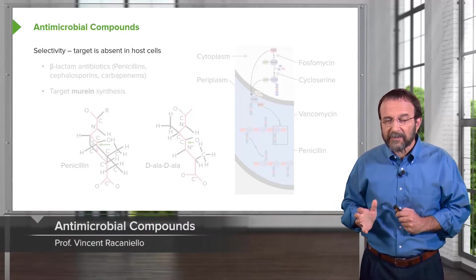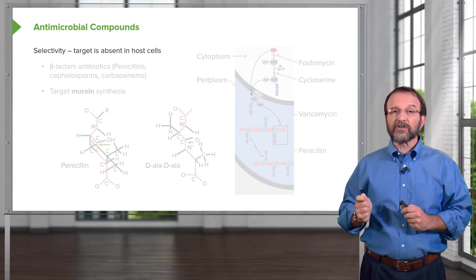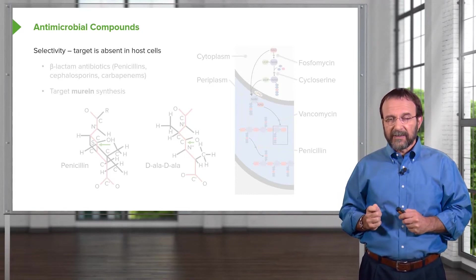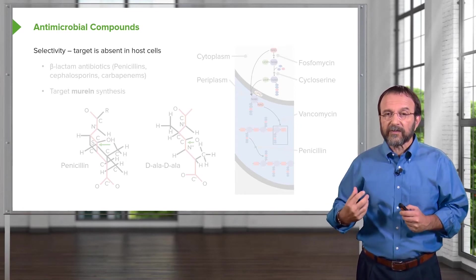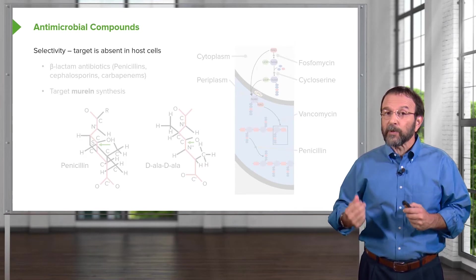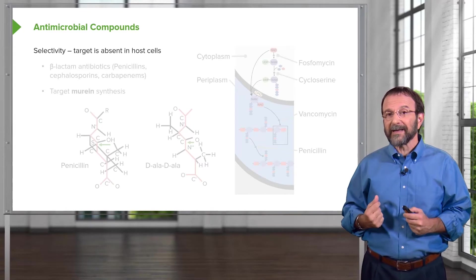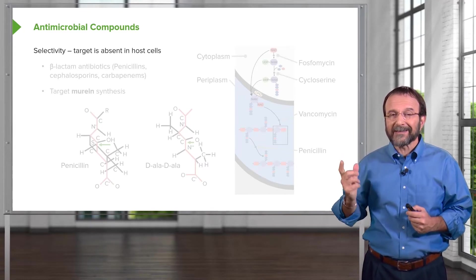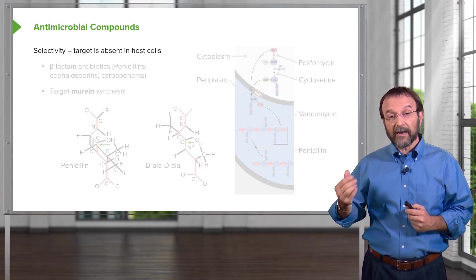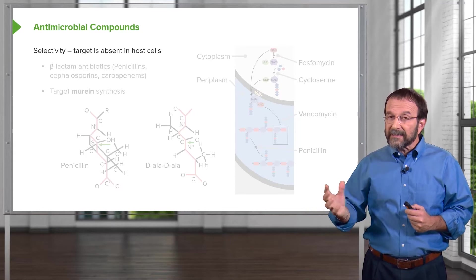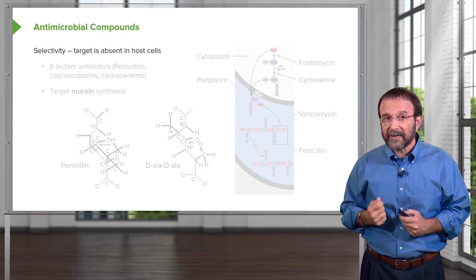I'd like to end this discussion by talking about antimicrobial compounds used to treat bacterial infections. When we have a bacterial infection, we need drugs that will kill the bacteria but not harm us. In other words, the antibiotics or antimicrobial compounds have to be selective — they have to target things in bacteria that are not present in our cells. Fortunately, this is relatively easy because bacteria are very different from eukaryotic cells.